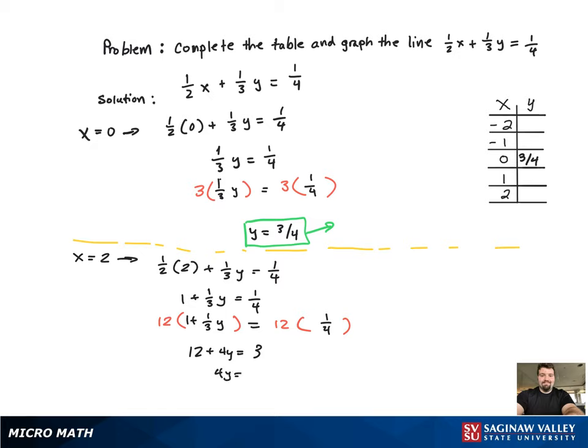Subtract the 12 over. Divide by the 4, and you get y equal to negative 9/4. And that's going to correspond with x equal to 2 in the table, as you're about to see.